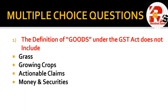The first question: the definition of goods under the GST Act does not include — grass, growing crops, actionable claims, money and securities. The right answer is money and securities, because money and securities are not included under the definition of goods under GST. This is a very important first question.